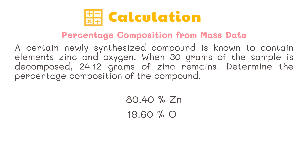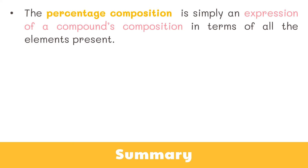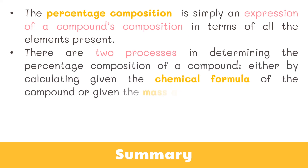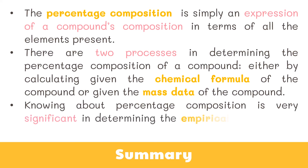80.40 percent zinc plus 19.60 percent oxygen equals 100 percent. The calculations are reasonable because they add up to 100 percent. You can see in the result that by mass, the compound is mostly zinc with 80.40 percent composition. To wrap things up: percentage composition is simply an expression of a compound's composition in terms of all the elements present. There are two processes in determining it — first, by calculating given the chemical formula, and second, given the mass data of the compound. Knowing about percentage composition is very significant in determining the empirical formula of a chemical substance.